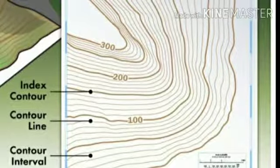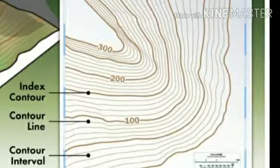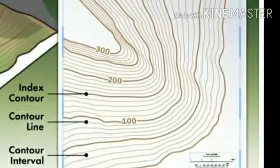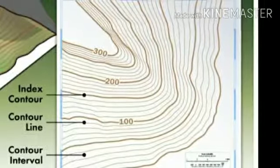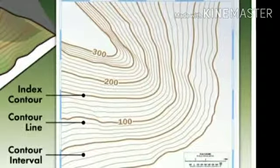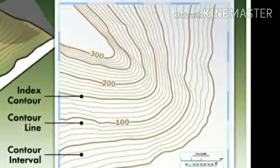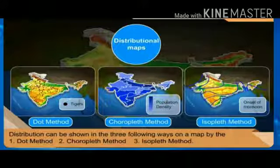The following conclusions are drawn on the basis of isopleth maps: first, if the lines are closer to each other, then the change in the variable is steep, and if the lines are far away from each other, then it is gentle. Second, we get an idea of the natural trend of the distribution of the variable with the help of this map. Through this part of the lesson, we have covered distribution maps and the methods used to draw them: dot method, coropleth method, and isopleth method.